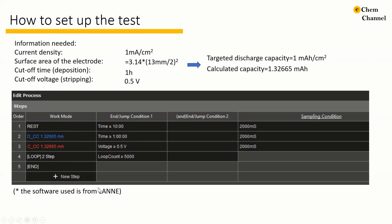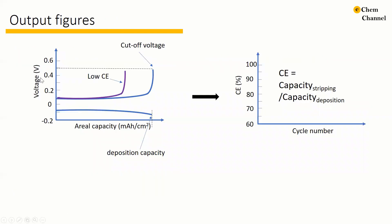The software that I show here is from LANA, but for other brands the setting should be almost the same. What we obtain from the test is a voltage profile of different cycles. From the curve, we can obtain the deposition branch and the stripping branch. The deposition capacity and cutoff voltage are the parameters that we set before the test. The Coulombic efficiency can be directly observed from the voltage profile — if the stripping process has much lower capacity, it means that the Coulombic efficiency is low. By changing the current density, we can also obtain a series of Coulombic efficiencies at different current densities, and plot them against cycle numbers.